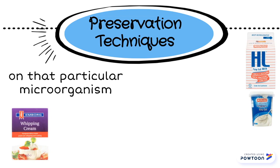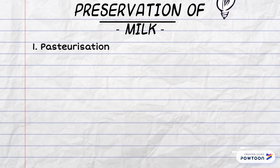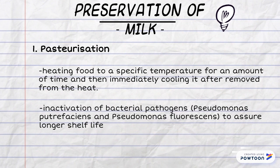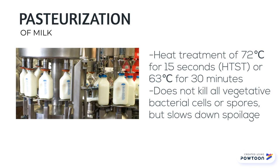To prevent spoilage, let's look at preservation techniques for milk, yogurt and whipping cream. One technique to preserve milk is pasteurization — a process of heating food to a specific temperature for an amount of time and then immediately cooling it to inactivate bacterial pathogens and assure longer shelf life. An example is heat treatment at 72 degrees Celsius for 15 seconds, or 63 degrees Celsius for 30 minutes. Although it does not kill all vegetative bacteria cells or spores, it slows down the spoilage of milk.